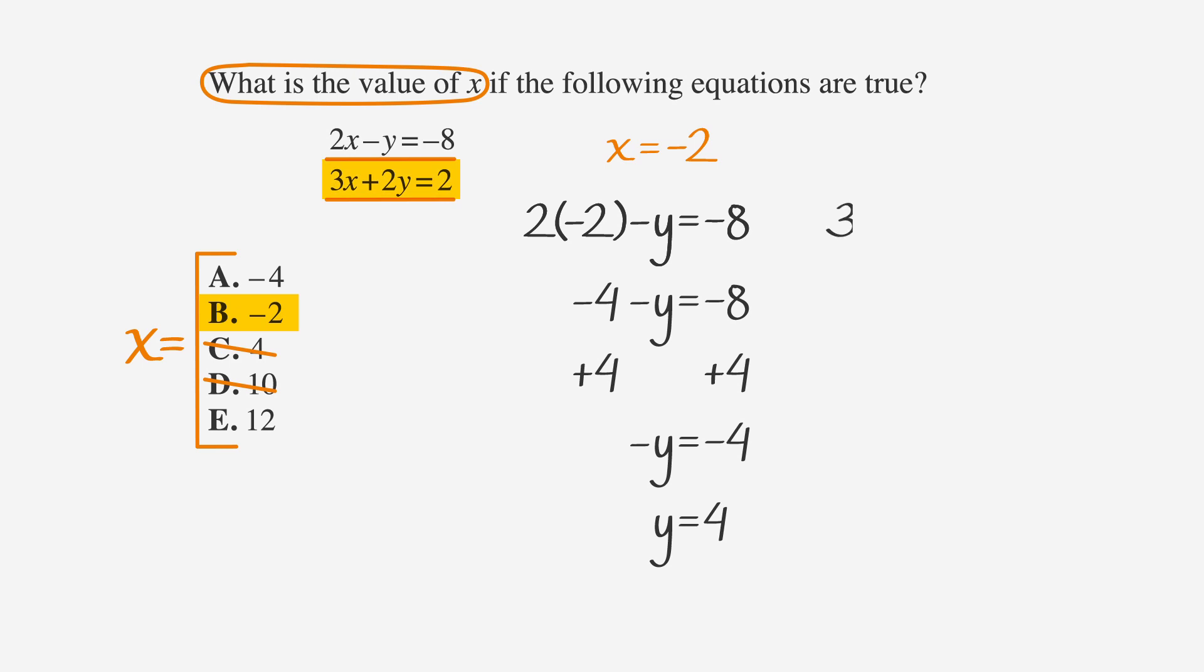The second equation is 3 times negative 2 plus 2y equals 2, which is negative 6 plus 2y equals 2. Add 6 to both sides and you get 2y equals 8 and y equals 4. When we plugged in x equals negative 2, we got the same answer for y in both equations, so we know that B is the correct answer.